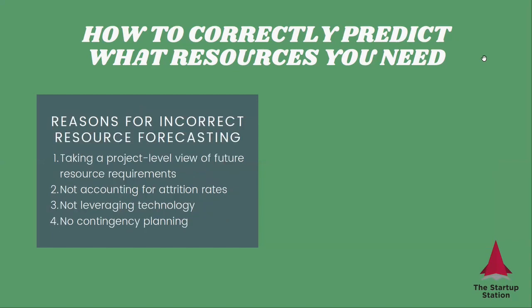What are the reasons for incorrect forecasting? You may just focus on the project-level view of future resource requirements — needing a resource for this project without thinking about the longer-term view of whether you'll need them after. You may not be properly accounting for attrition rates. Not leveraging technology to automate certain processes instead of relying on humans. And finally, no contingency planning, so that when something happens, your business significantly suffers.